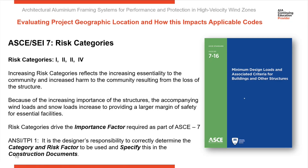ASCE-SEI-7 uses risk categories to define the importance factor of each project you're looking up. As you move up the scale in risk categories, it reflects an increasing value of the facility to the community. As the importance increases, so does the associated wind and snow loads used to evaluate the structural performance of the facility. We have different importance factors, and that really drives the value of the project to the community.